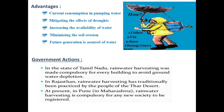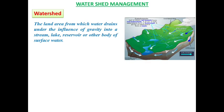In Tamil Nadu, rainwater harvesting is compulsory for every building to avoid groundwater depletion — every home, institution, and government office has a rainwater system. In Rajasthan, people in the Thar Desert have the traditional practice of rainwater harvesting to avoid droughts. At present in Pune, rainwater harvesting is compulsory for any new society to be registered. The picture illustrates how turning an umbrella can store water and pass it to a tank to share with others.